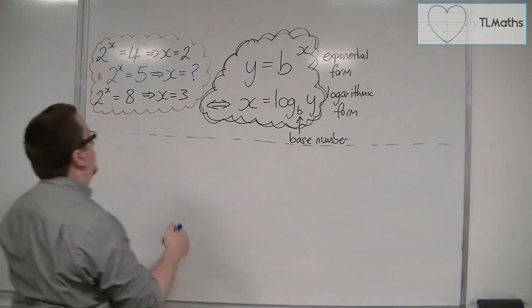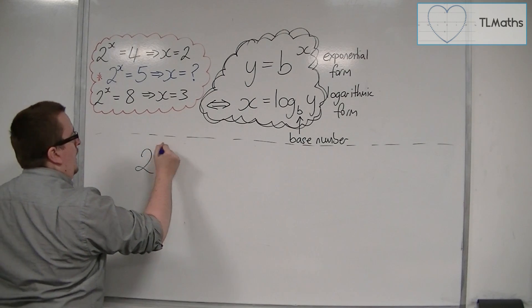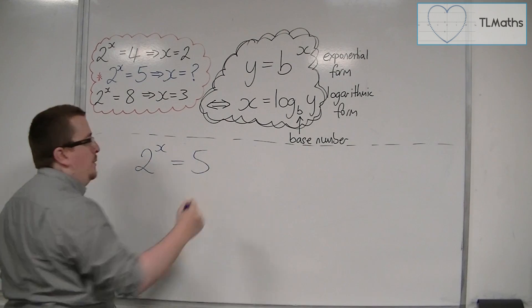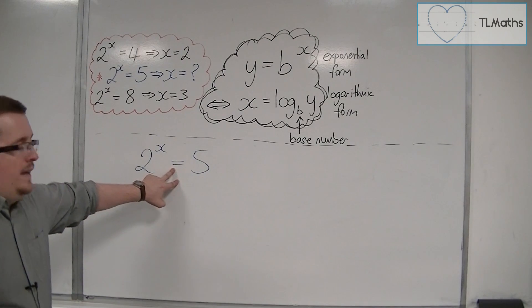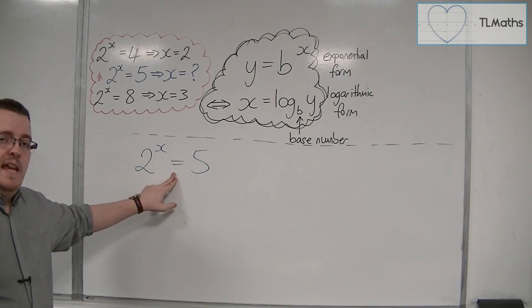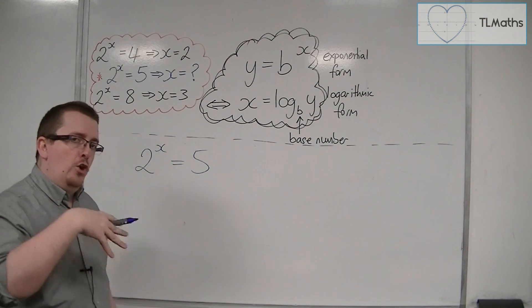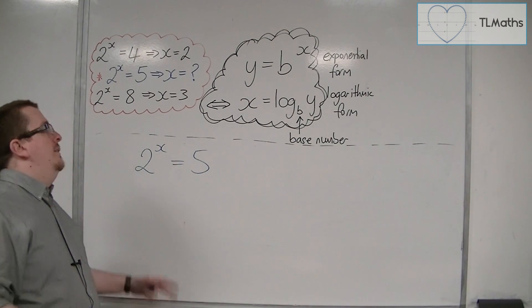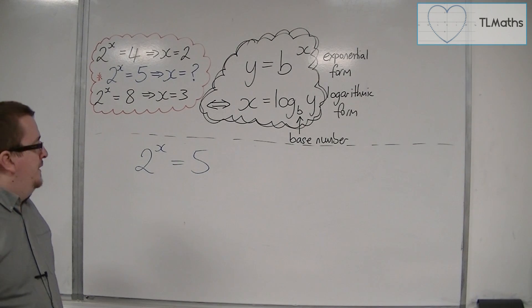2 to the x is equal to 5, and I want to work out what the value of x is. Now this is an equation that is in exponential form. If I convert it to logarithmic form, then I should have a shot at being able to solve it.